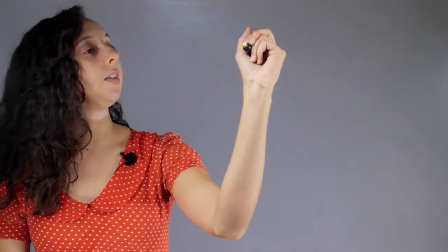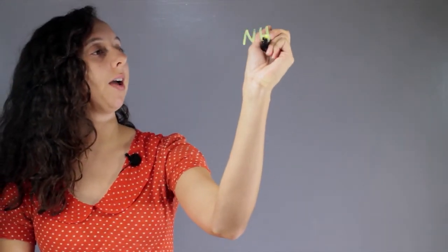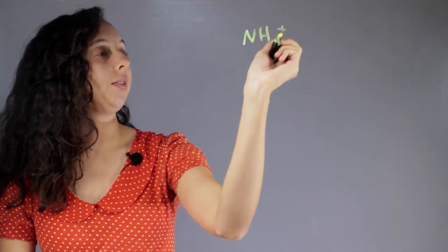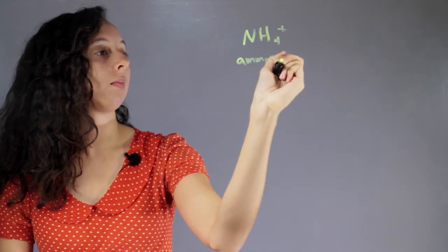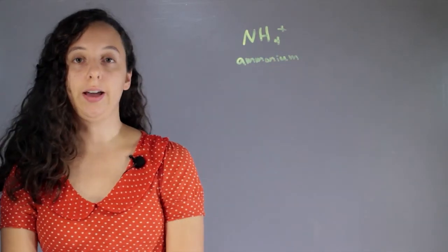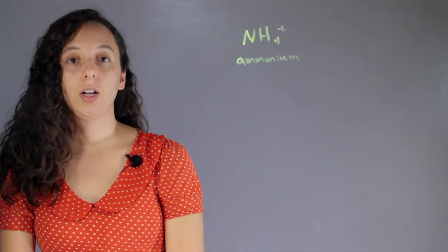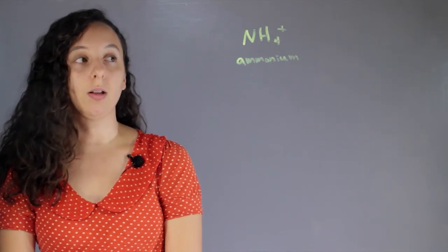Let's say we have a typical polyatomic ion, NH4+, or ammonium. So how do we decide if this is covalent or ionic? Well, let's draw it out so we can see all the bonds.